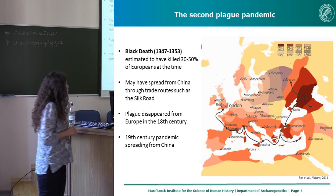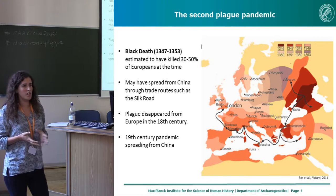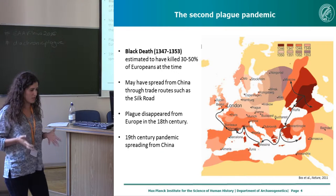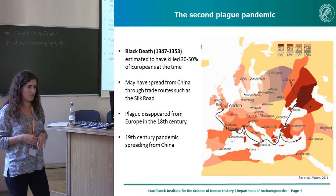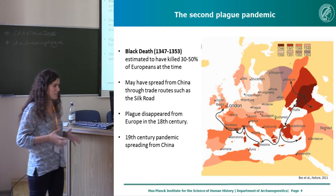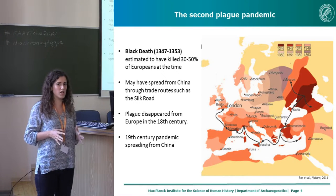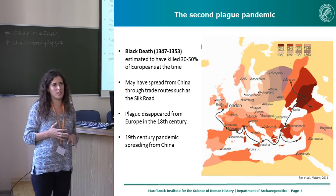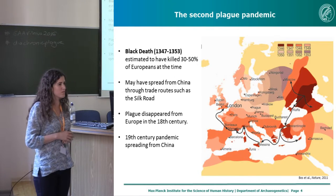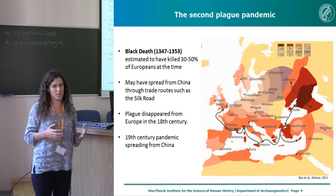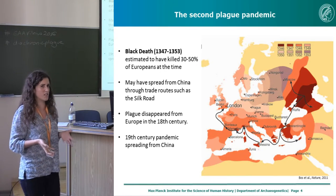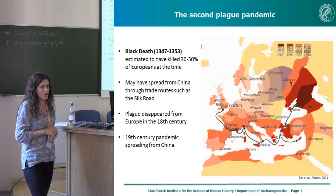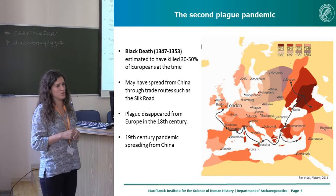Plague did not stop there. After the Black Death, several outbreaks of plague are documented in Europe until the 18th century, when the disease essentially disappeared from the continent. The next pandemic occurrence of the disease is the third pandemic, which starts from China in the 19th century and then disseminated throughout most of the world.